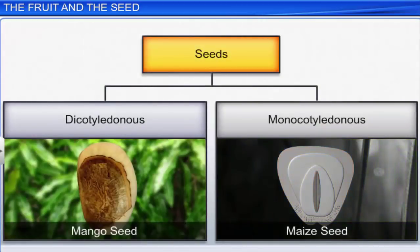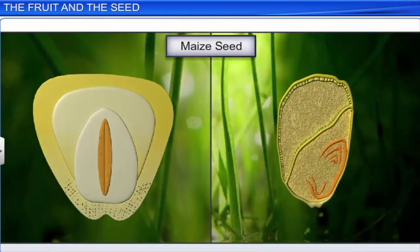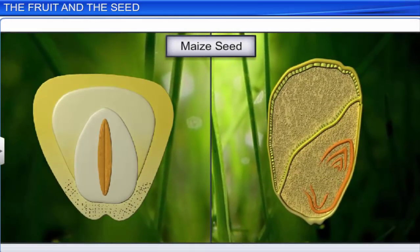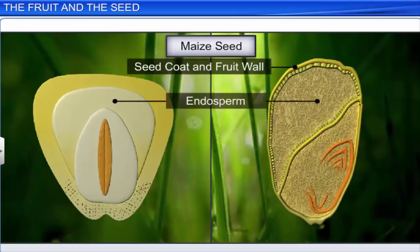Like dicotyledonous seeds, the outermost covering of monocotyledonous seeds is also known as the seed coat. For example, the maize seed has a membranous seed coat that is usually fused with the fruit wall. Moreover, like dicotyledonous seeds, monocotyledonous seeds can be endospermic as in maize, or non-endospermic as in Cymodocea.